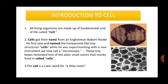All living organisms are made up of the fundamental unit of life called cells. Cells got their name from an Englishman, Robert Hooke. He first saw and named the honeycomb-like tiny structures 'cells' while experimenting with a new instrument we now call a microscope. He saw these in a slice of cork. These tiny boxes reminded him of plain small rooms that monks used to live in, called cells. The word 'cell' is actually a Latin word for a little room.